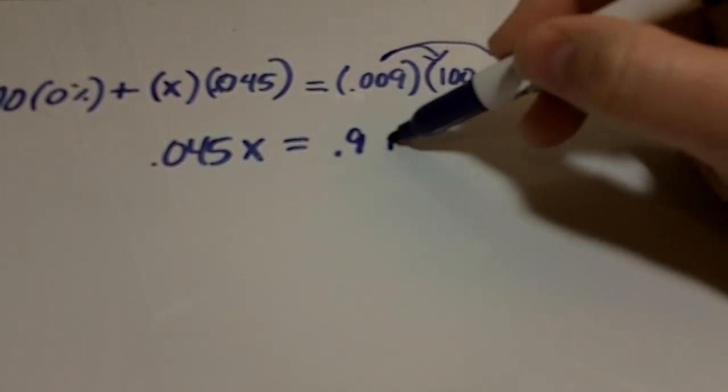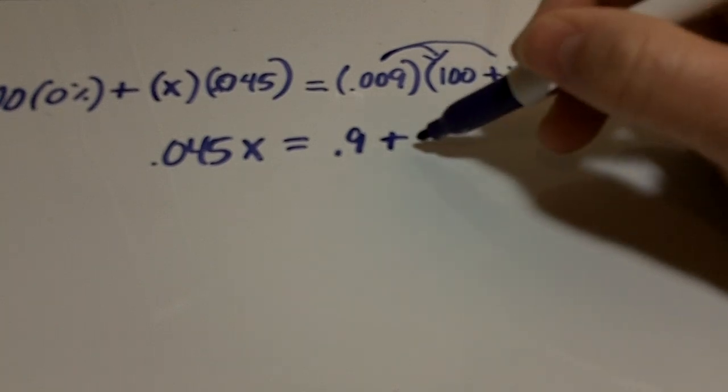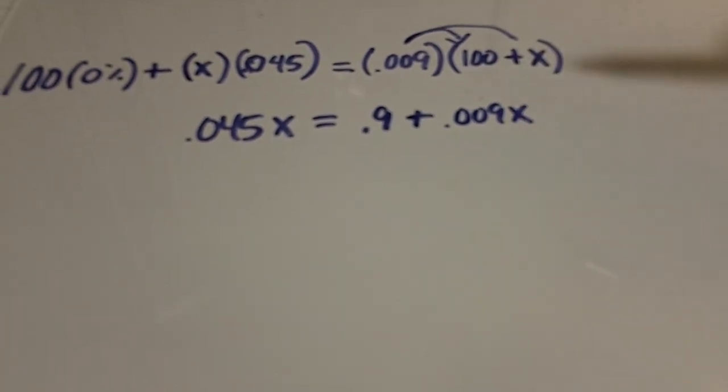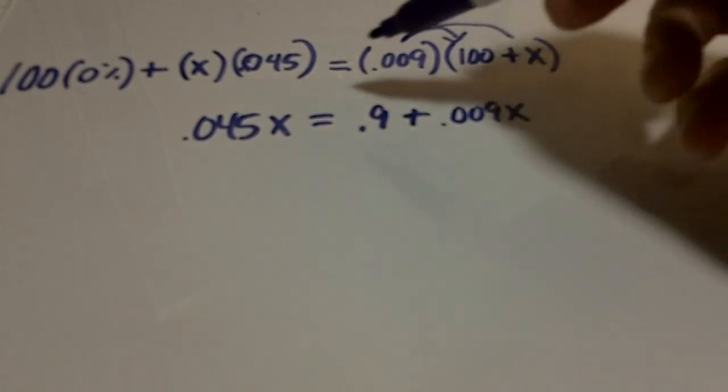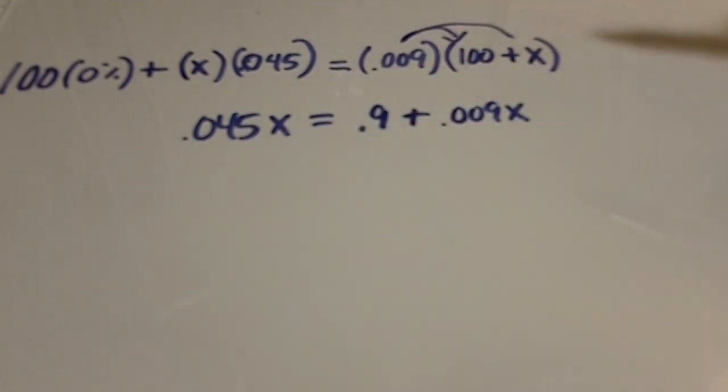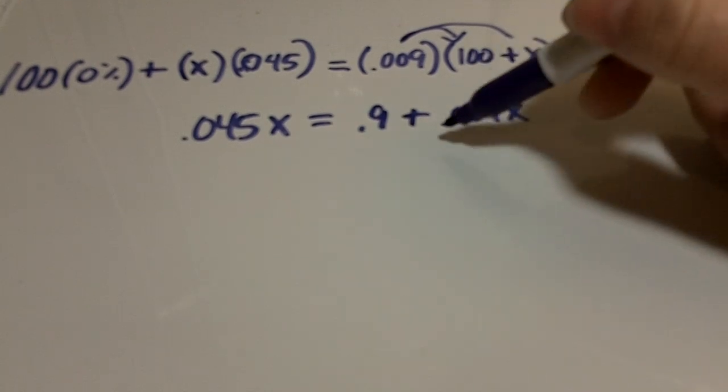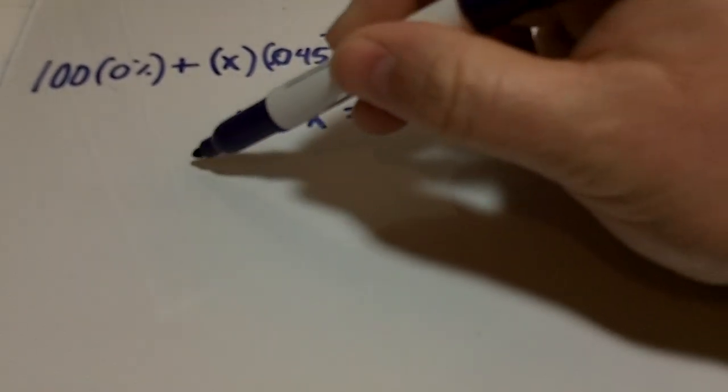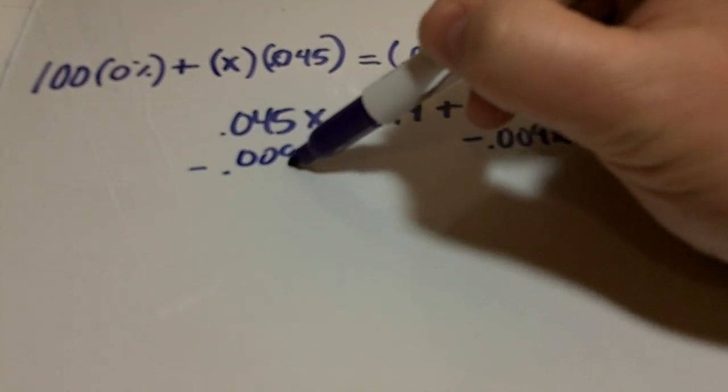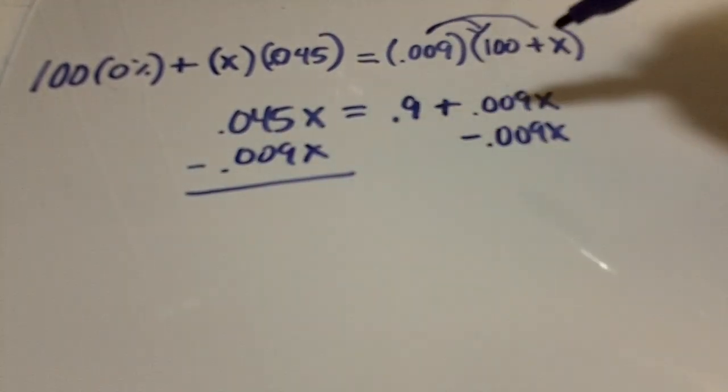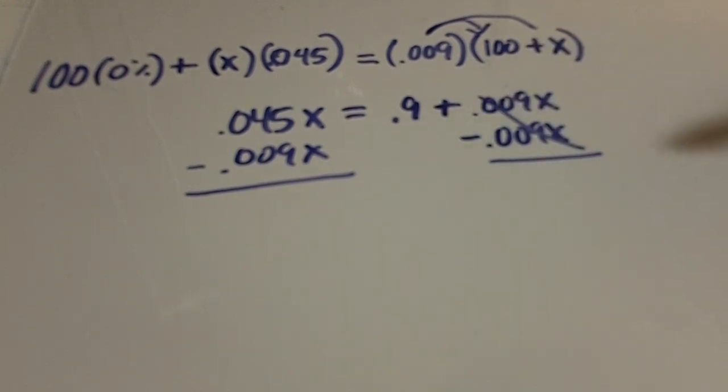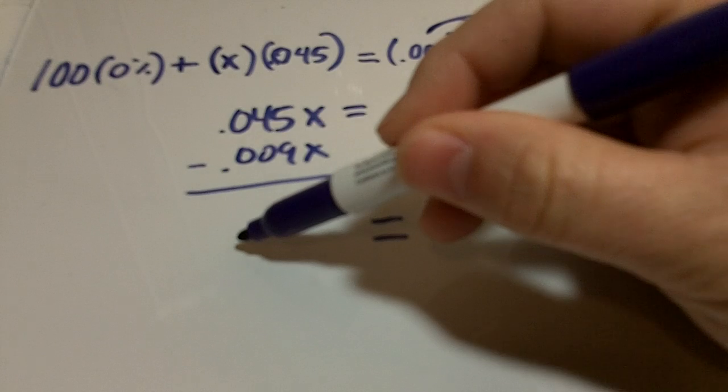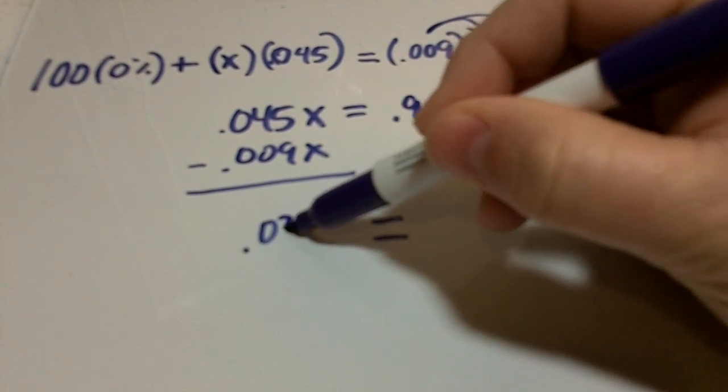Okay, so from here we need to get this x over here with this x so that we have all the x's on one side of the equation. So we're going to subtract 0.009x. Okay, so over on this side this just cancels, so what we've got is 0.036x.